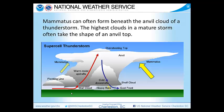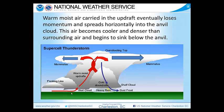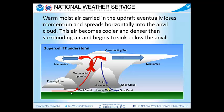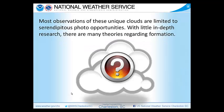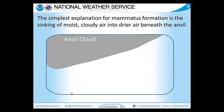You can get them on the front or the back end. As is typical with thunderstorms, warm, moist air gets carried into the updraft, but eventually loses momentum and spreads horizontally into the anvil cloud. This air becomes cooler and denser than the surrounding air, and begins to sink below the anvil. Most observations of these unique clouds are limited to serendipitous photo opportunities. With little in-depth research, there are many theories regarding formation. The simplest explanation for mammatus formation is the sinking of moist, cloudy air into drier air beneath the anvil.